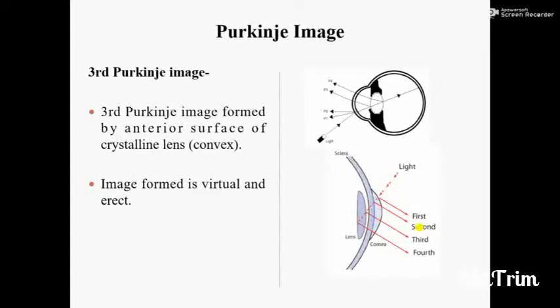Next, the 3rd Purkinje Image is formed by the anterior surface of the crystalline lens. The anterior surface of the crystalline lens is convex. Because of this convex shape, the image formed is virtual and erect.